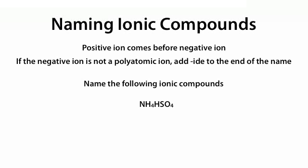NH4HSO4 is made from NH4+ and HSO4-. These are two polyatomic ions. NH4+ is ammonium and HSO4- is hydrogen sulfate, so this compound is called ammonium hydrogen sulfate.